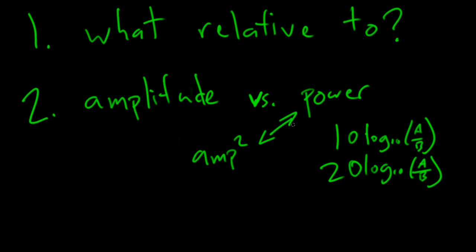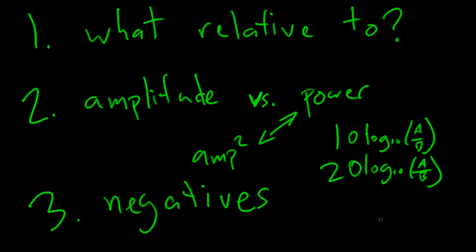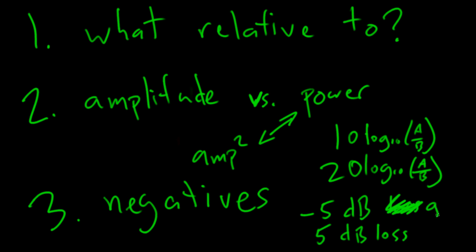If you mix amplitude and power together, you run into trouble with complicated math. Third, people get their negatives wrong. For example, 'negative 5 dB loss' is confusing—they probably mean 5 dB loss, or negative 5 dB gain. If my brother is negative 3 dB shorter than me, he's actually 3 dB taller. You have to be careful about negatives and double negatives.